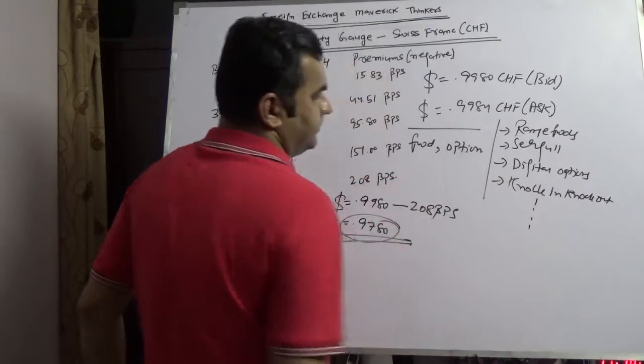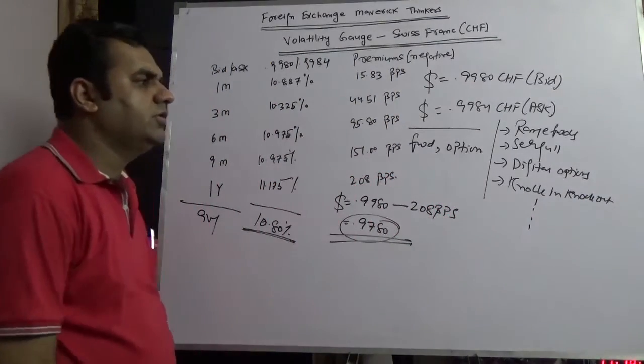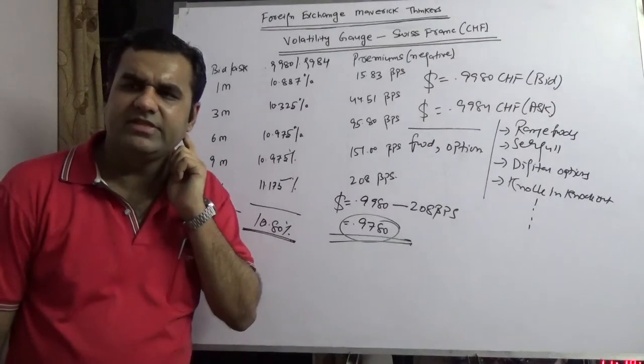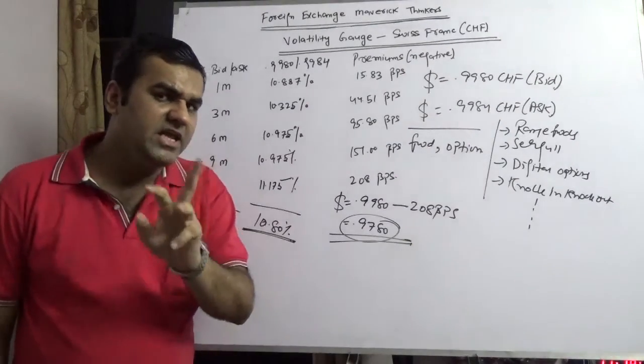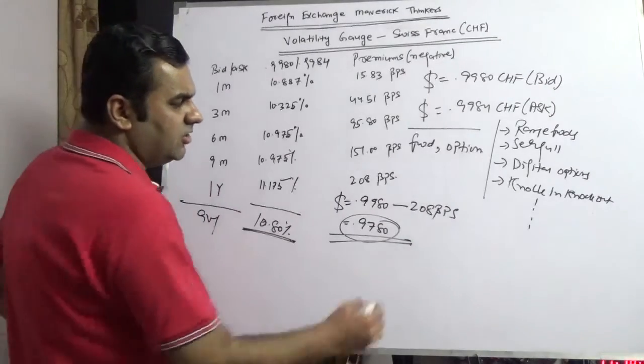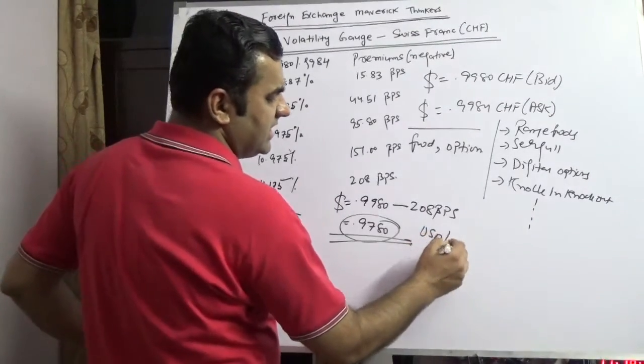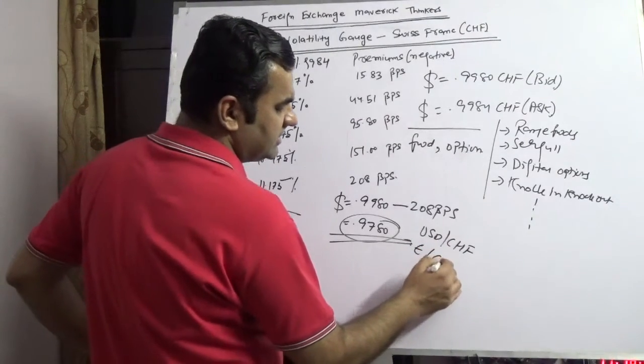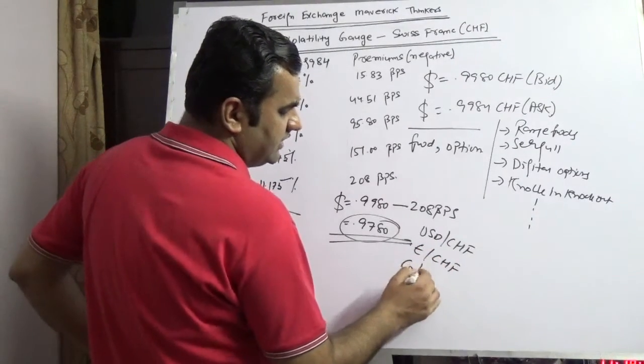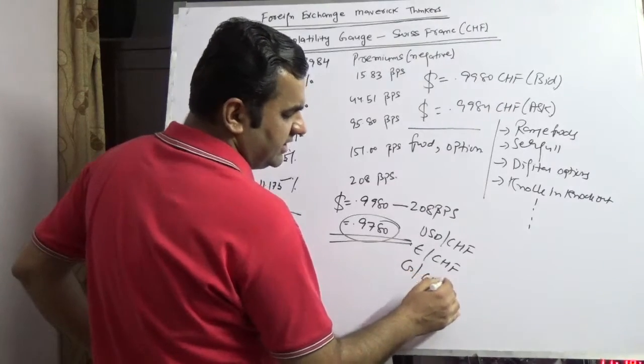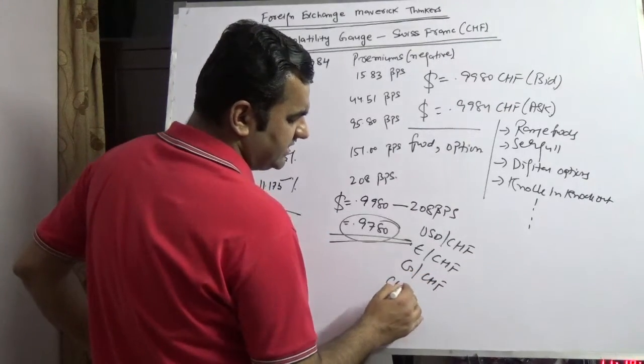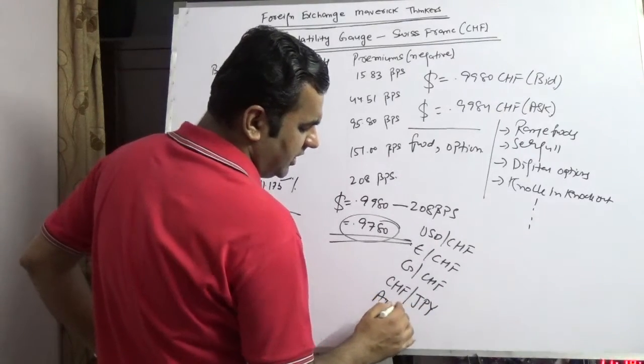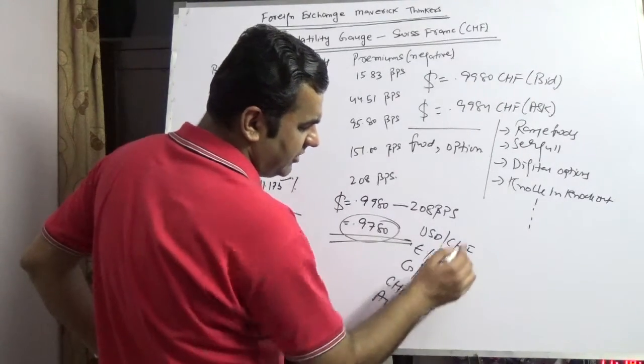So the purpose of the video is to make aware the corporate treasurers, traders, interbank traders who are dealing with the CHF. Now directly and indirectly, the direct of CHF is USD CHF and the indirect of CHF is euro CHF and GBP CHF. Sometimes people are also saying that CHF and Japanese yen is also a very hot pair, and aussie dollar and CHF is also a very hot pair.